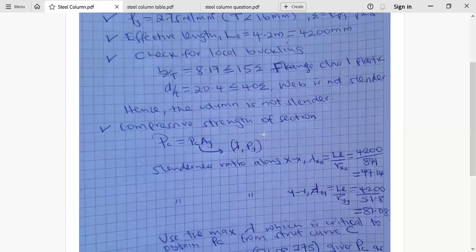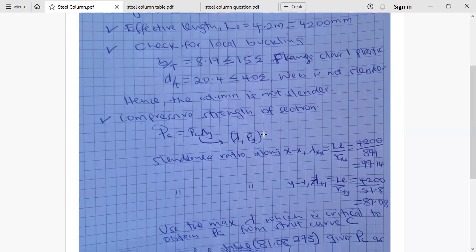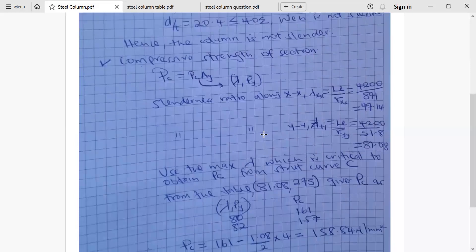Let's proceed. Now, this is how we calculate slenderness ratio. They are here. There are two of them. We have along XX and along YY. Now, to get lambda XX, slenderness ratio along X-axis, you take effective length divided by radius of gyration along the X-axis RXX, which is 4,200 over 89.2. Radius of gyration along YY, you get it as 81.08.